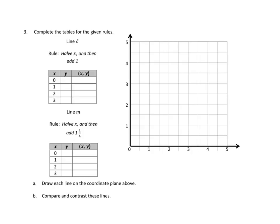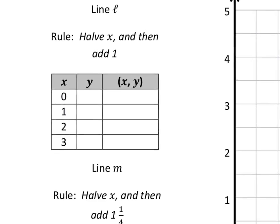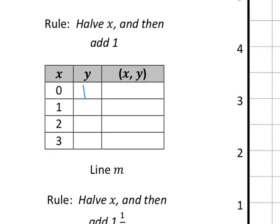Problem number three. Complete the tables for the given rules. Again, we have a line L, and again we have a rule. And the rule is halve x and then add 1. Oh, interesting. So halve x. So 0 divided by 2 is still 0, and then add 1. Oh okay, well that's easy. It's just going to be 1. I need to zoom in here a little bit. So that's the coordinate point 0, 1, because we take x, cut it in half, that's still 0, and then add 1.